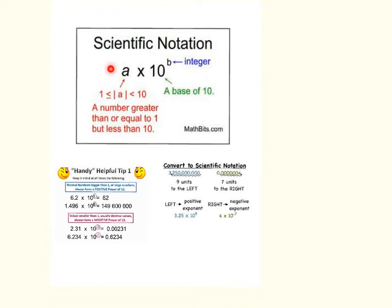Here's the generic form of scientific notation: you have a number out front times 10 raised to a power. The absolute value of the number in front has to be greater than or equal to 1 but less than 10. The base is always 10, and the exponent is always an integer — such as negative 2, negative 1, 0, 1, 2, 3 — it can't be a decimal or a fraction.